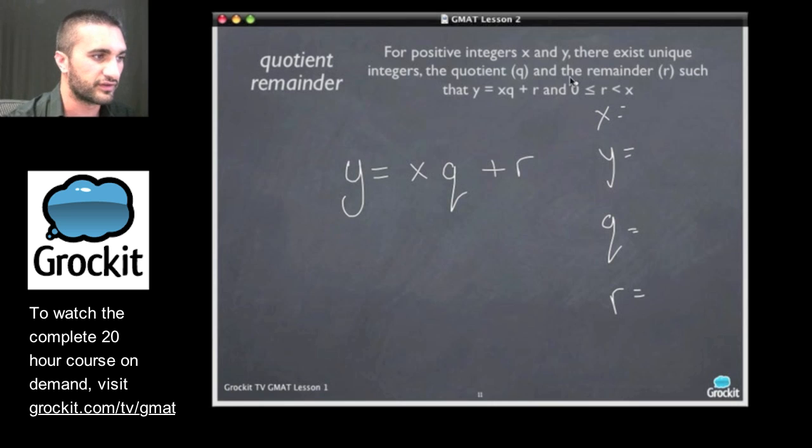You're going to see me doing this a lot over the course. For positive integers x and y, let's say five and three, there exists unique integers, the quotient q and the remainder r, such that, so let's take a look here.